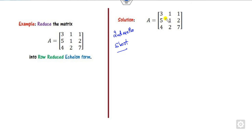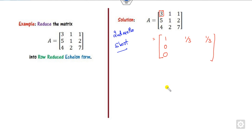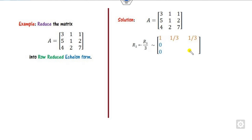I will tell you a shortcut method that allows you to complete the table within 1 minute. Your first target is still to make the leading entry 1. Once you do, write the leading entries column as the identity column. Instead of writing out all the row operations, your target is to compute the remaining values using a simple rule: determinant divided by box element.